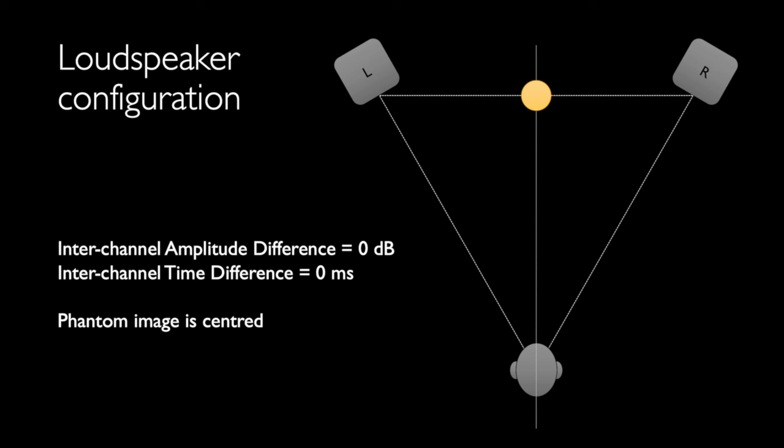Let's now make one channel louder than the other. My voice is now 2.5 decibels louder in the right channel than in the left channel, without changing the time delay difference, so you should hear my voice slightly to the right of center — about one-third of the distance to the right loudspeaker, or about 10 degrees to the right, because the right loudspeaker is out at 30 degrees. If you're listening under headphones, I probably moved more than one-third of the distance to your right ear, because we're more sensitive to interchannel differences in headphones due to no leakage across your head.